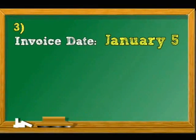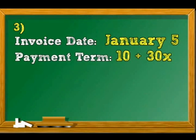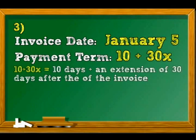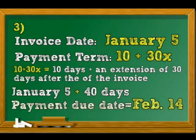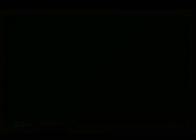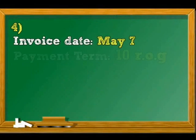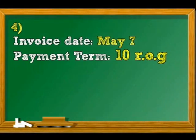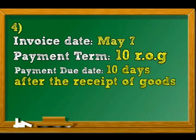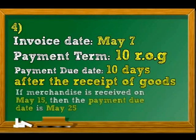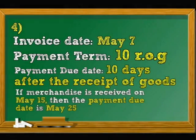The invoice date is January 5 with a payment term of 10 + 30x. This means 10 days plus an extension of 30 days after the date of invoice, so the payment due date is February 14. The invoice date is May 7 with a payment term of 10 ROG or Receipt of Goods — the payment due date is 10 days after the receipt of goods. If the merchandise is received on May 15, then the payment due date is May 25.